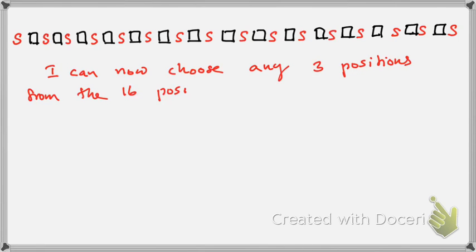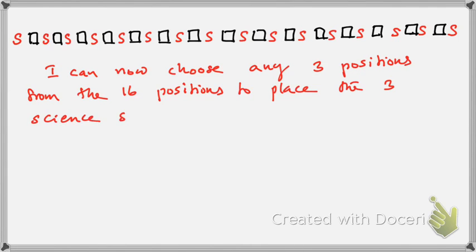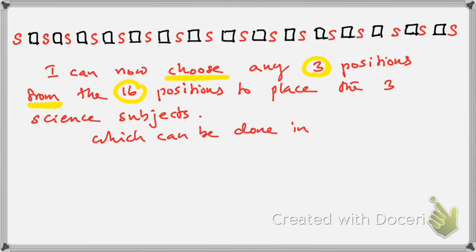Now, if there are 16 positions possible but I have only 3 science subjects, from these 16 available positions I need to use only 3 positions. So I need to choose 3 positions out of these 16 positions to place my 3 science subjects. From 16, how do I choose 3? In how many different ways do I choose 3? From 16 choose 3, that can be done in 16C3 different ways.